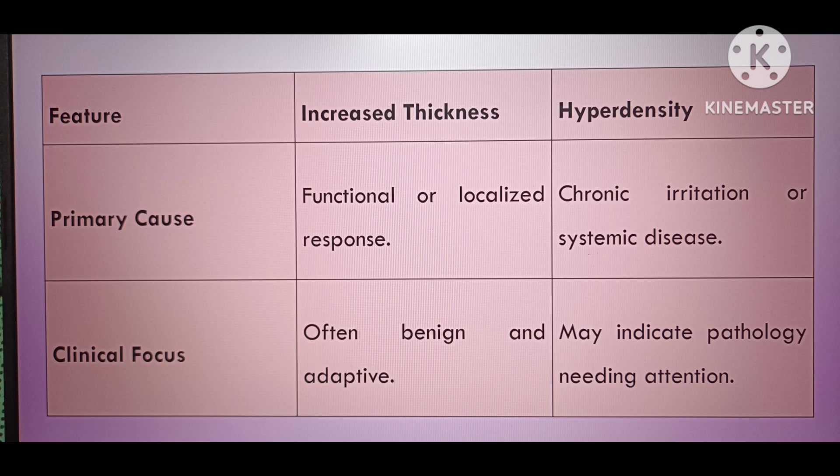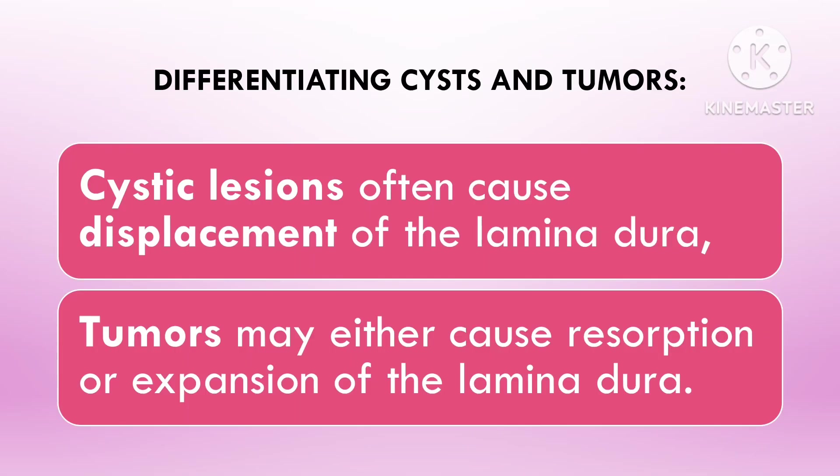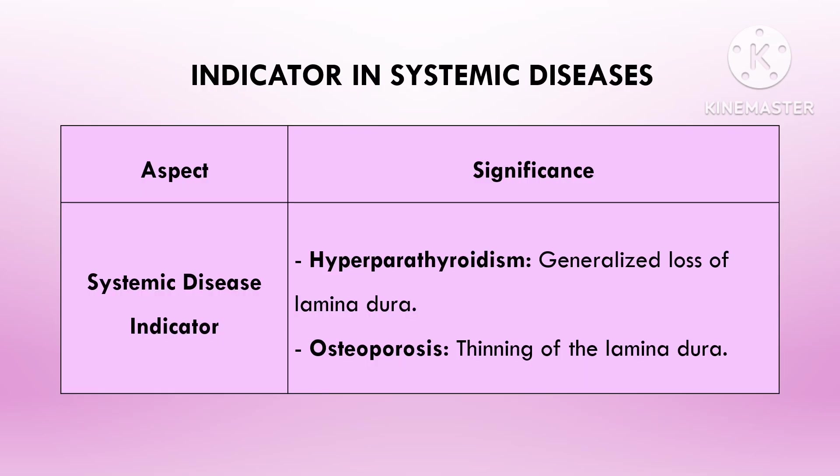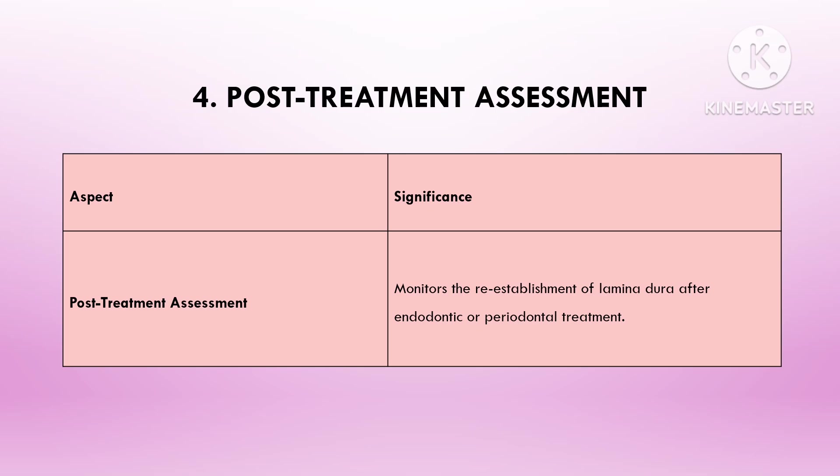Hyperdense lamina dura may occur due to idiopathic sclerosis, a localized bone hardening, or due to chronic inflammation causing sclerosis. Hyperdensity reflects chronic stress or localized adaptive responses and points to systemic bone changes, warranting deeper investigation. Increased thickness, on the other hand, is usually localized and may not need further intervention.